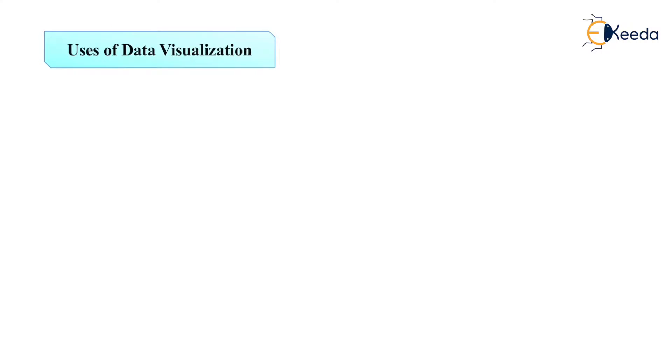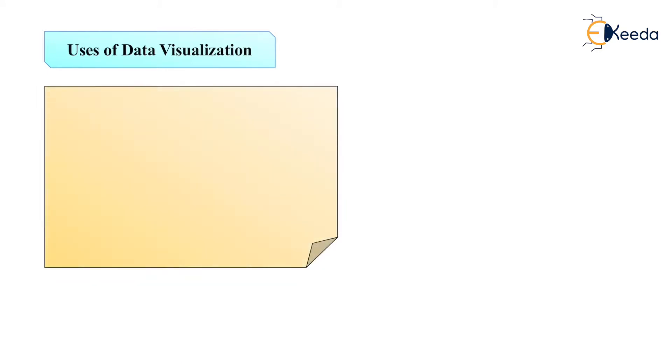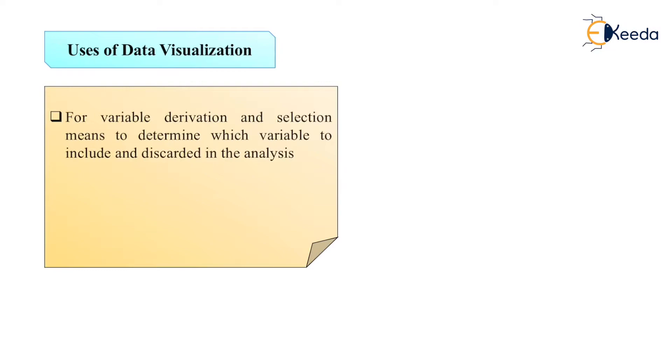The usage of data visualization: a powerful way to explore data with presentable results. A primary use as the preprocessing portion of a data mining process. Supports the data cleaning process by finding incorrect and missing values. For variable derivation and selection means to determine which variable to include and discard in the analysis. Also plays a role in combining categories as part of the data reduction process.